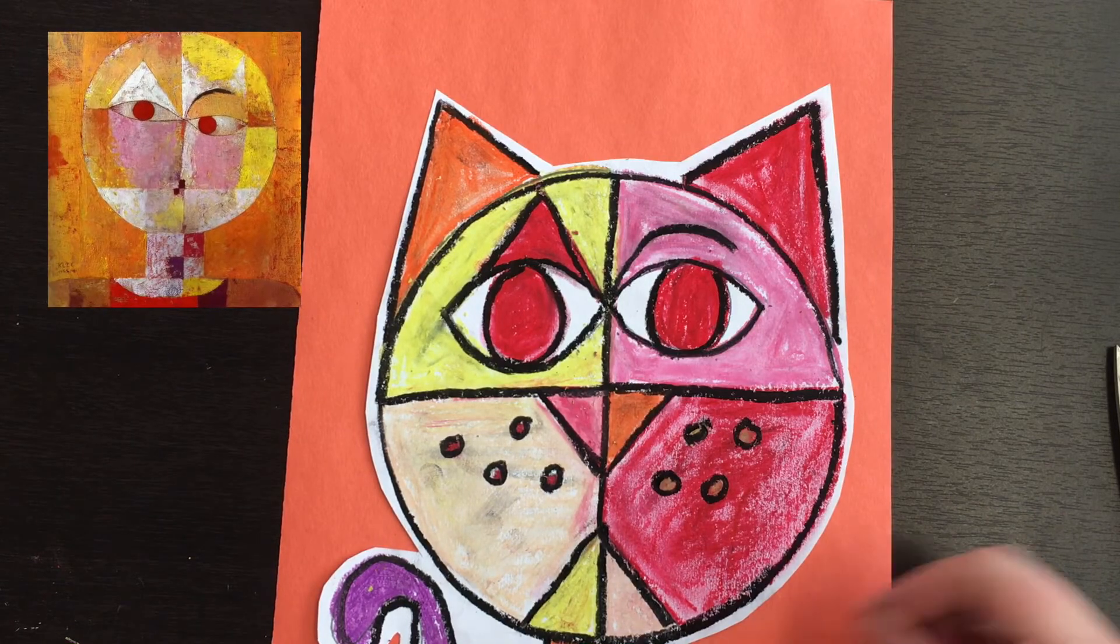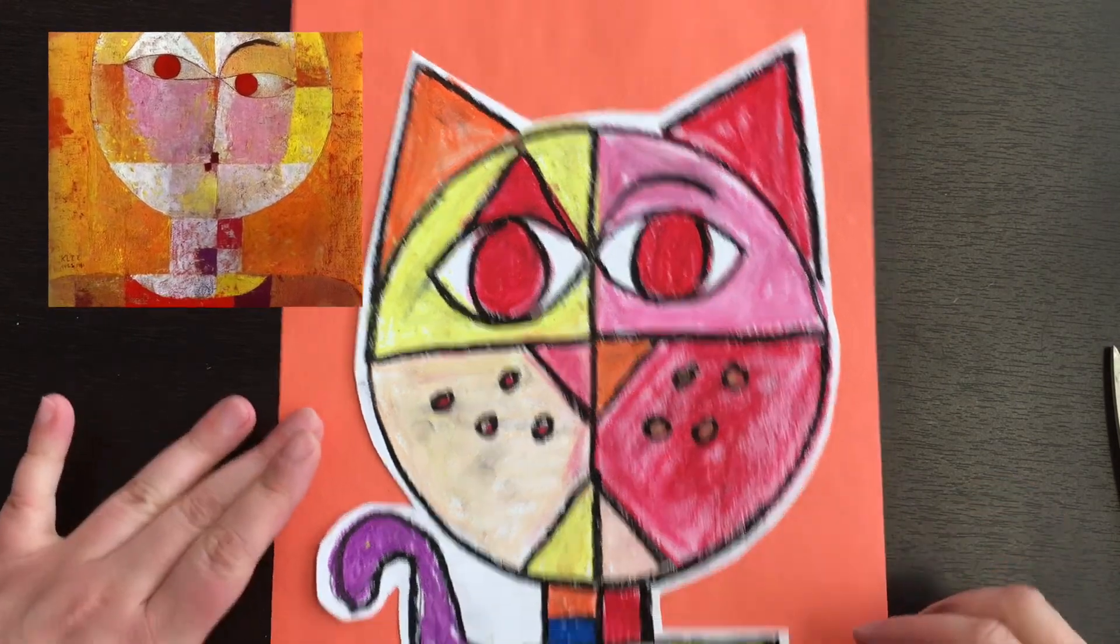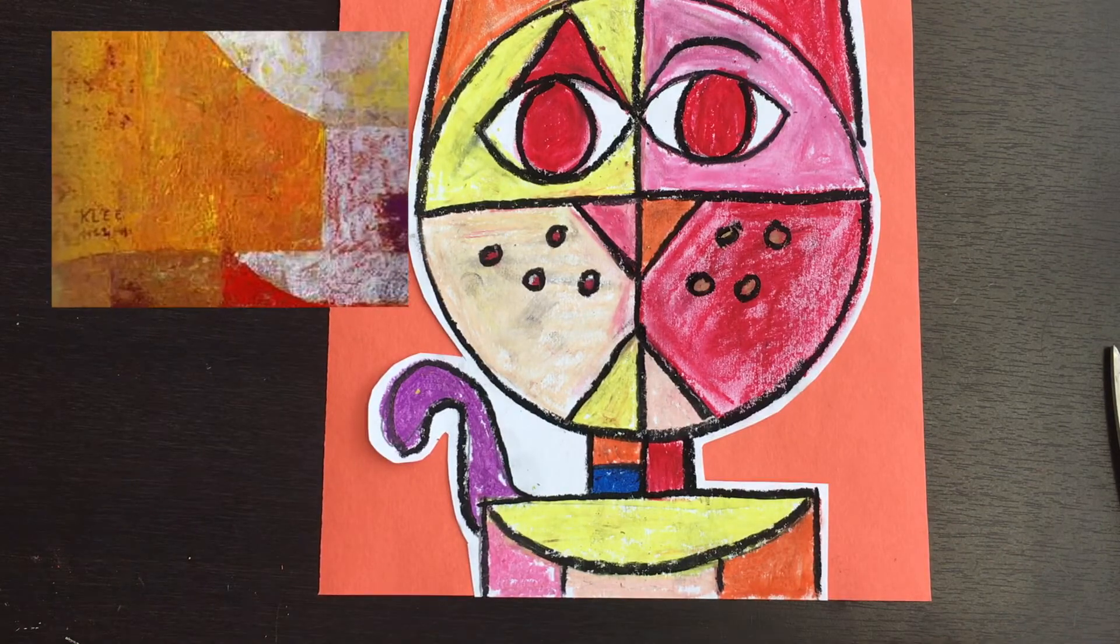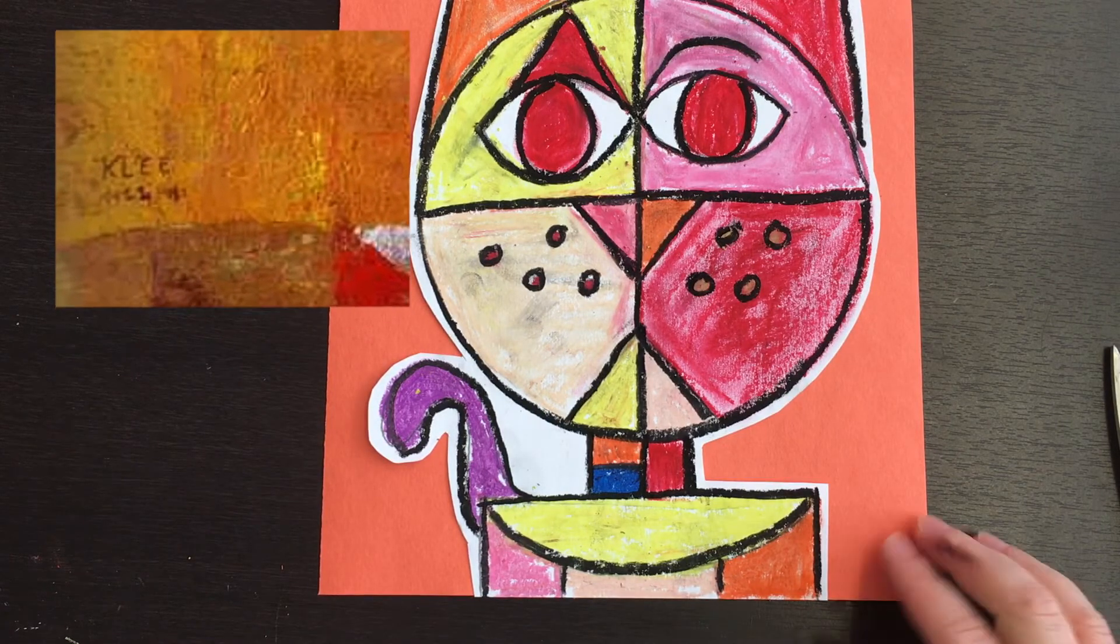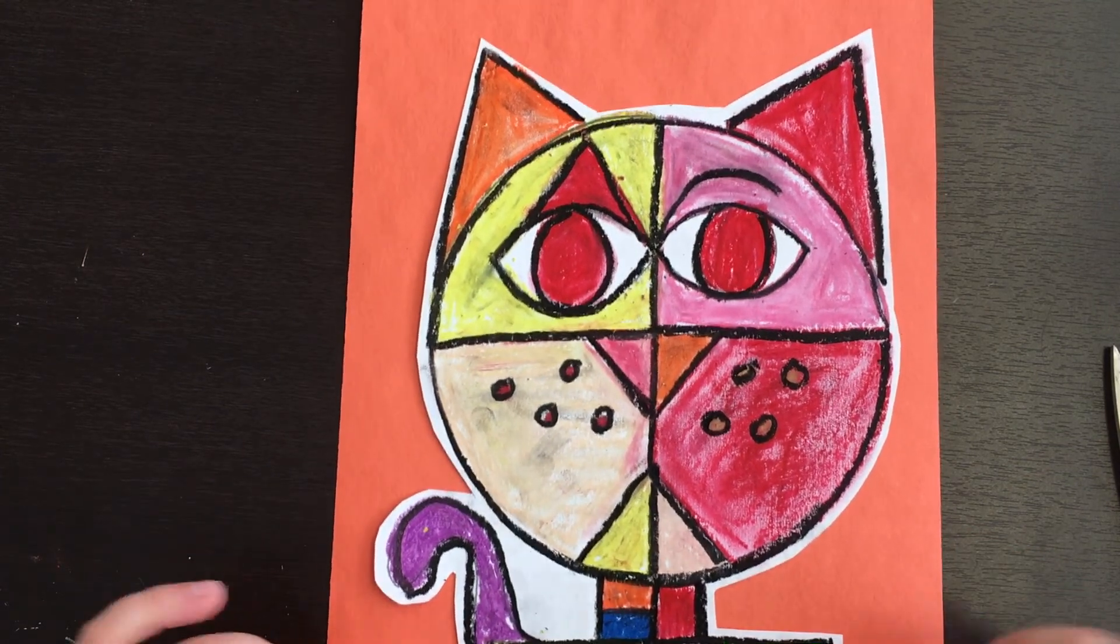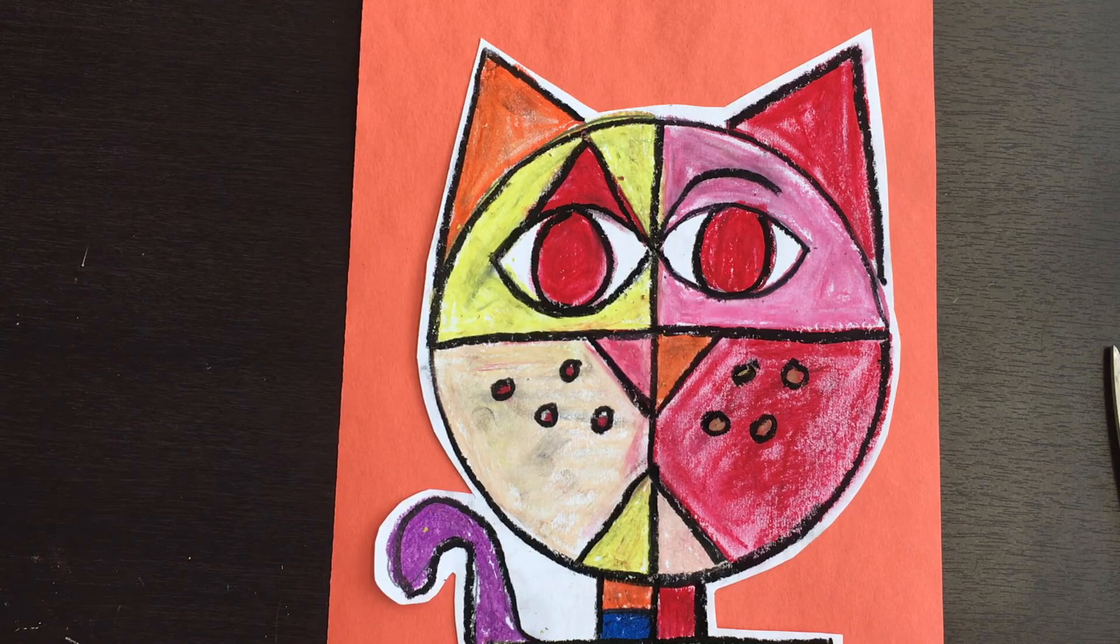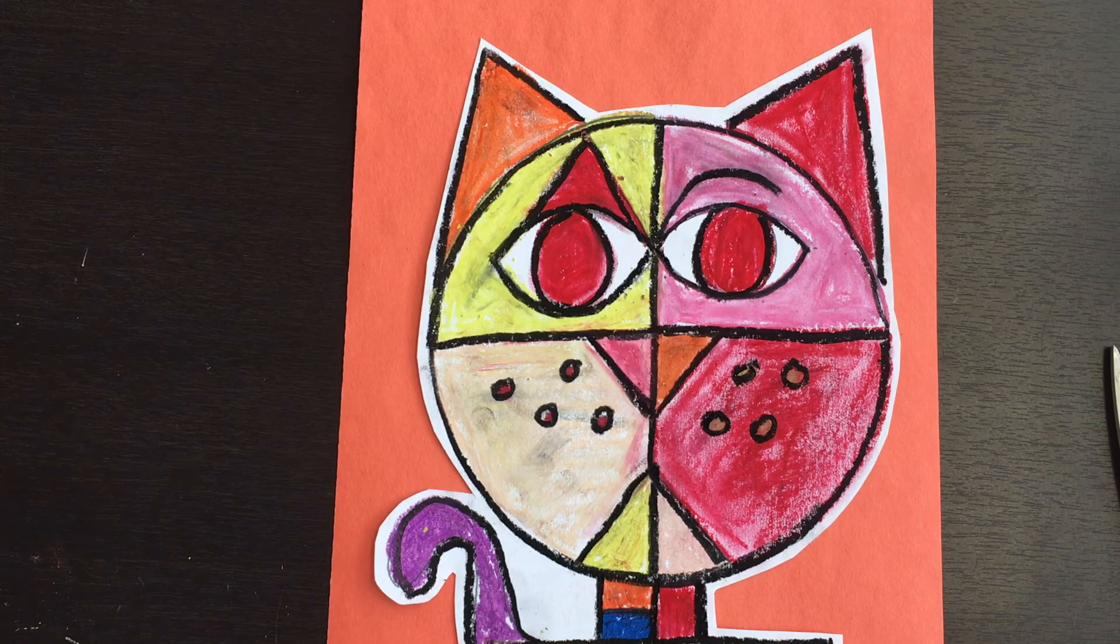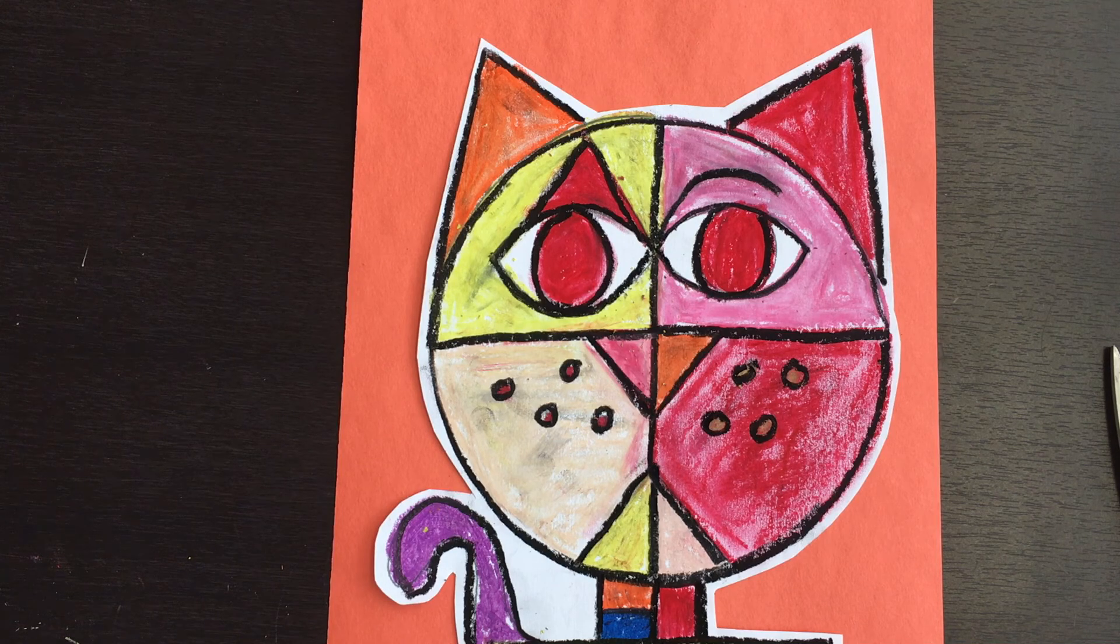If you want to sign your name on the front somewhere, like Mr. Klee did in his, like you can see right here in Senecio, he's got it right down at the bottom. You can. You don't have to put it at the bottom, but I've got space for that. I might do that. But once it's all done, we have made our very own copycat of Paul Klee's Senecio. You look awesome. I can't wait to see yours.